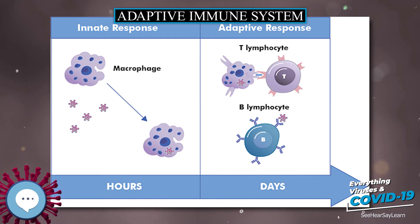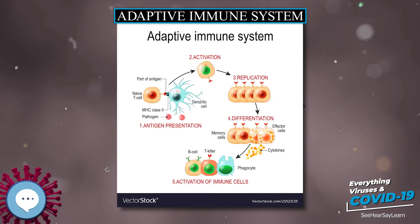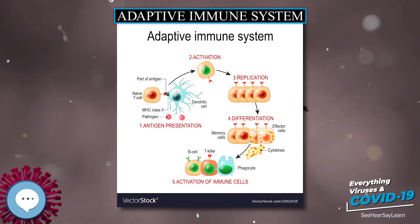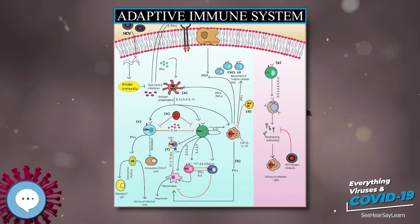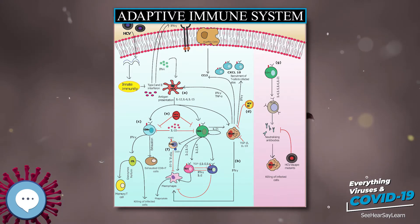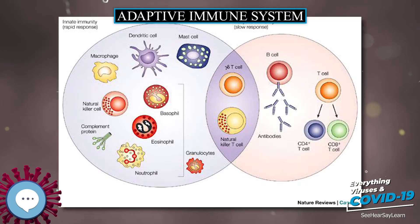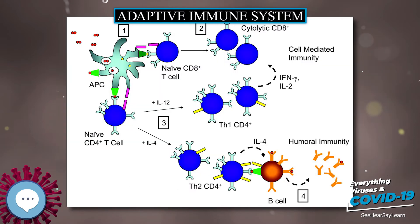Antigens are any substances that elicit the acquired immune response, whether adaptive or maladaptive to the organism. The cells that carry out the acquired immune response are white blood cells known as lymphocytes. Two main broad classes — antibody responses and cell-mediated immune response — are also carried by two different lymphocytes: B cells and T cells.